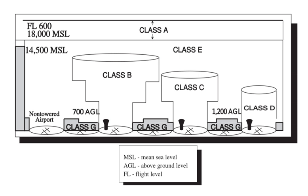In New Zealand, Classes B, E and F are not used at all. Class A is used for airspace above flight level 130. Class C is used for controlled zones above and around airports up to the overlying Class A. Class D is used for controlled zones around airports. Class G is used for all other airspace.